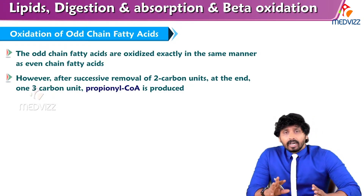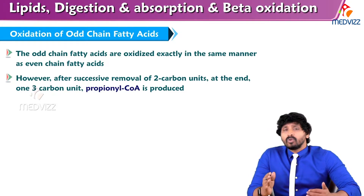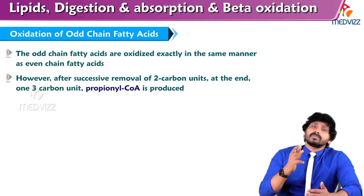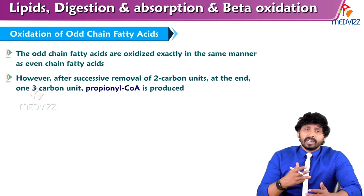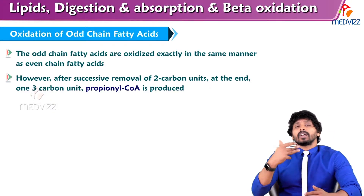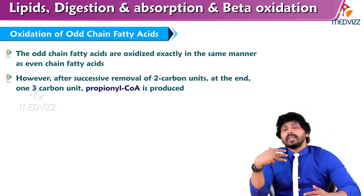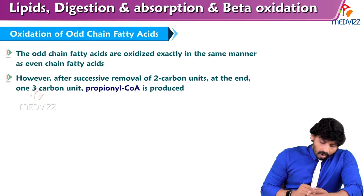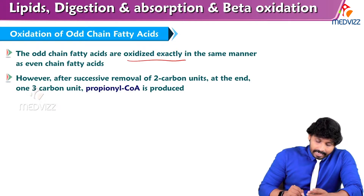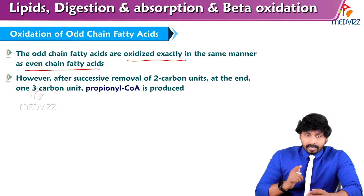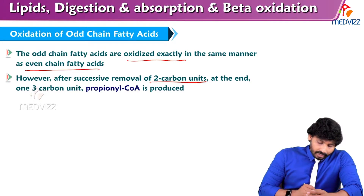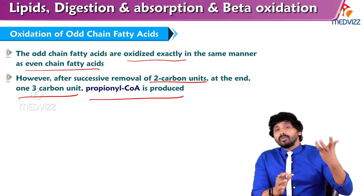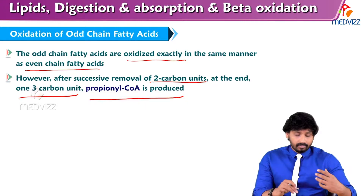At the last step there will be no removal of 2 carbons, so you will be getting a 3-carbon compound that is propionyl-CoA. In place of acetyl-CoA, you will be getting propionyl-CoA. How this propionyl-CoA will be involved in energy production — that we will see in this video. The odd chain fatty acids are oxidized in the same manner as even chain fatty acids until the last step. After successive removal of 2-carbon units, one 3-carbon unit propionyl-CoA is produced.